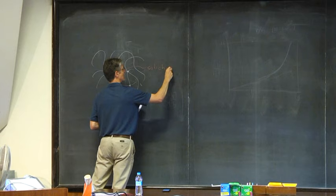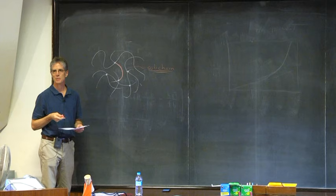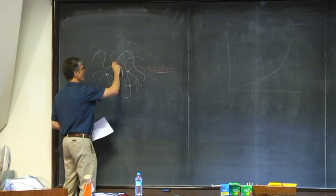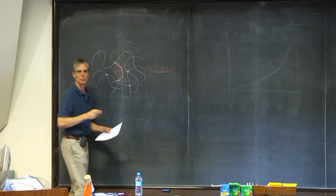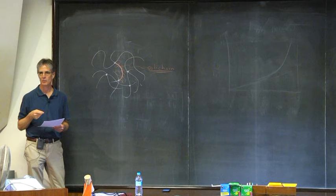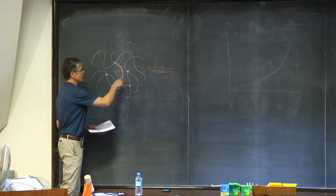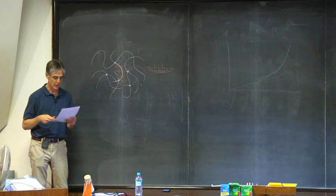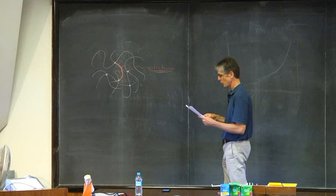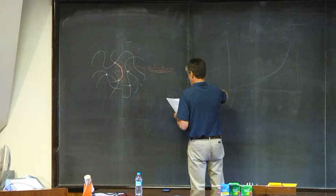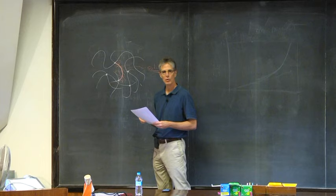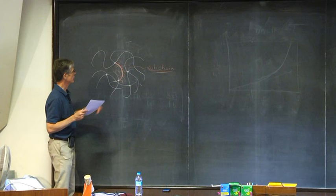A sub-chain is not typically straight. A better depiction would be to draw it as a random coil. If you're talking about rubber, the sub-chains between the cross-links look like something that bends all over the place.